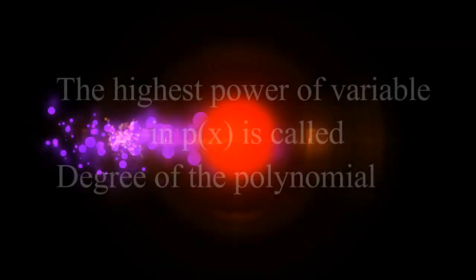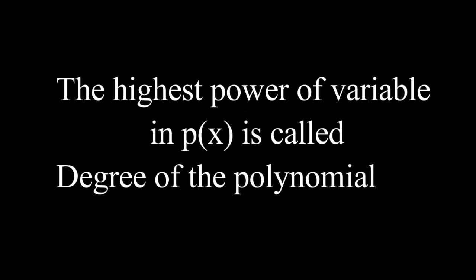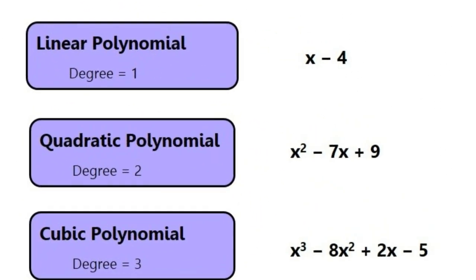The highest power of the variable in P of X is the degree of the polynomial. If the degree is one, it's a linear polynomial. If the degree is two, it's a quadratic polynomial. If the degree is three, it's a cubic polynomial.